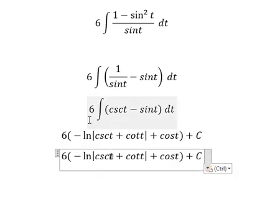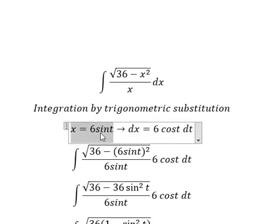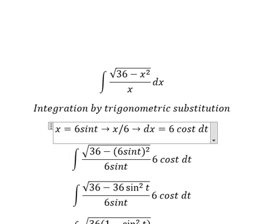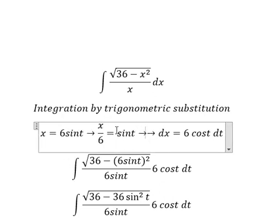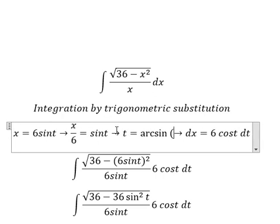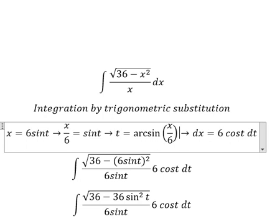About t, that is about this one. So we divide both sides by number 6, and now we can find the value of t equals to arcsine of x over 6. So I will put this one to change for t.